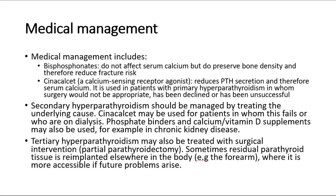For treatment, medical management includes bisphosphonates — these do not affect serum calcium but do preserve bone density and therefore reduce fracture risk. Cinacalcet, a calcium-sensing receptor agonist, reduces PTH secretion and therefore serum calcium. It is used in patients with primary hyperparathyroidism in whom surgery would not be appropriate, has been declined, or has been unsuccessful. Secondary hyperparathyroidism should be managed by treating the underlying cause; cinacalcet may be used for patients in whom this fails or who are on dialysis. Phosphate binders and calcium or vitamin D supplements may also be used, for example in chronic kidney disease.